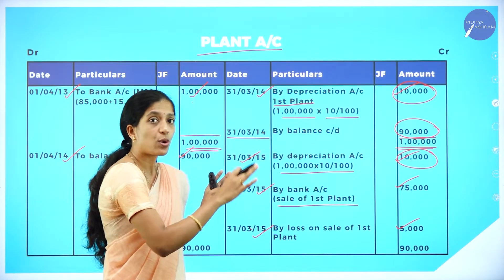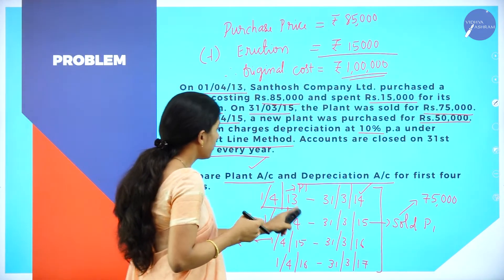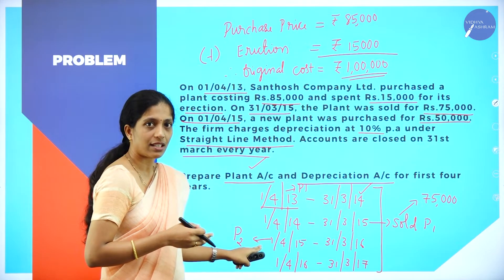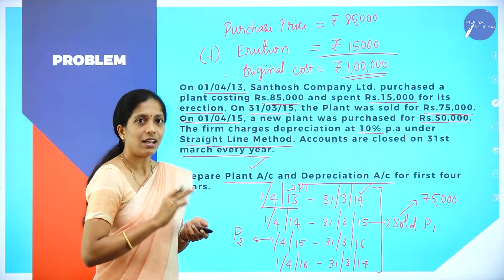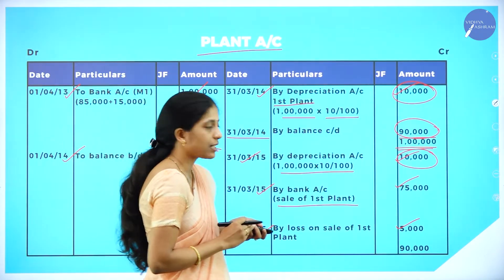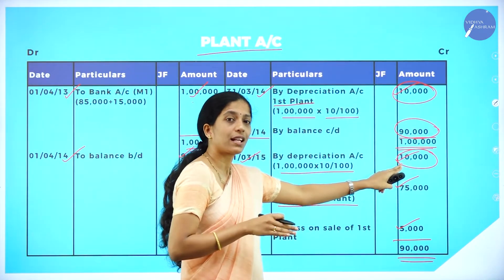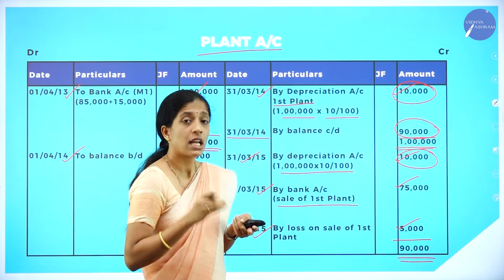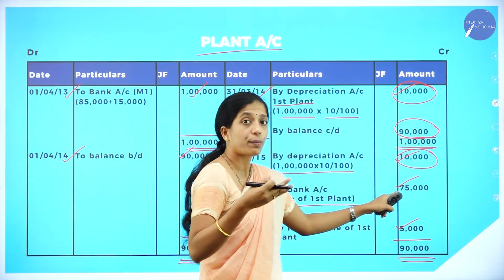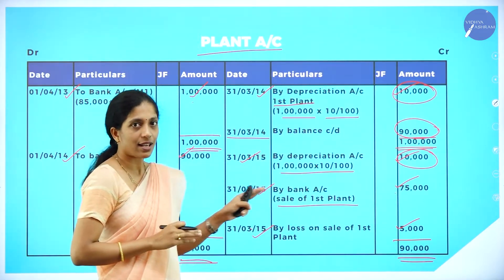We are done with the second year. Both sides of the plant account tally at rupees 90,000 — the debit side is 90,000 (balance brought down) and the credit side is also 90,000 (second year depreciation 10,000, sale proceeds 75,000, and loss on sale 5,000). After selling Plant 1, in the next year they will purchase Plant 2.